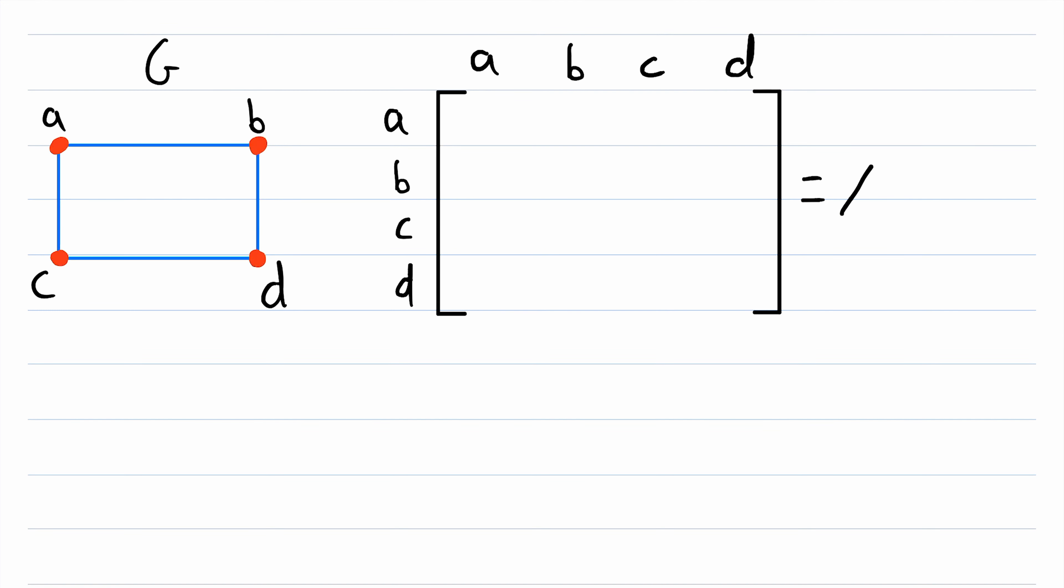And we'll call this adjacency matrix A. Adjacency matrices are defined like this: the entry in the i-th row and j-th column is equal to 1 if ij is an element of the edge set of the graph G, the graph that the adjacency matrix represents.